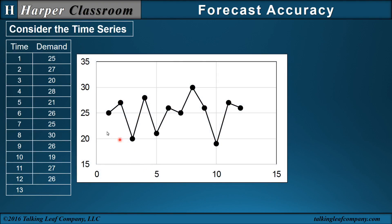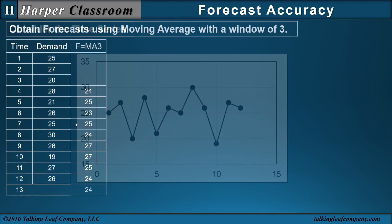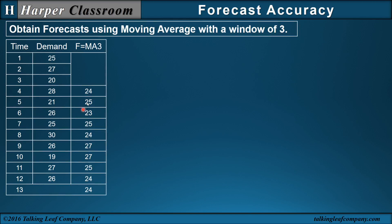So let's consider this time series — a stationary time series with a random component. We'll use a moving average with a window of three as the forecasting technique. So 24 is our forecast.